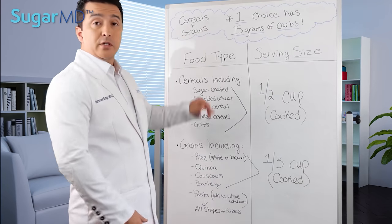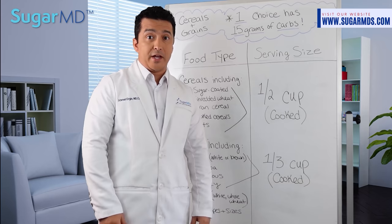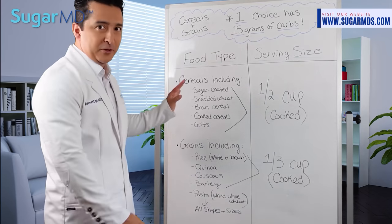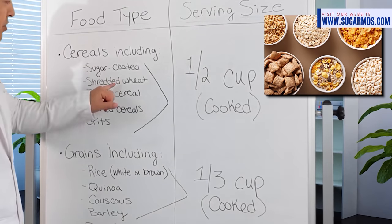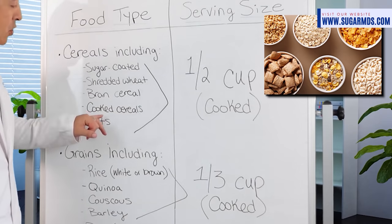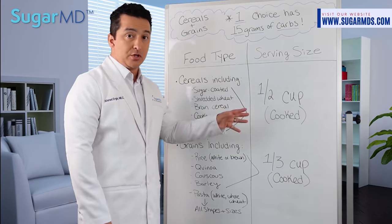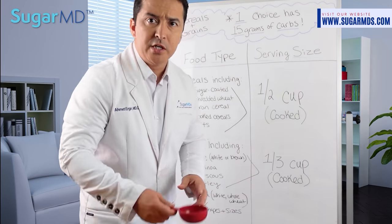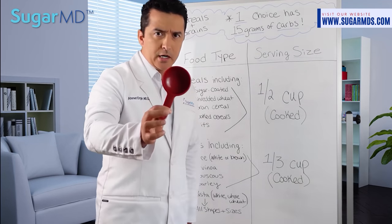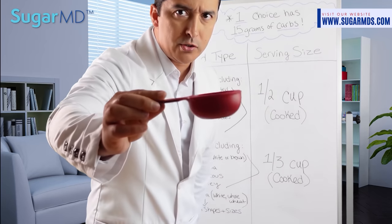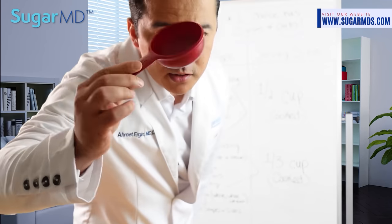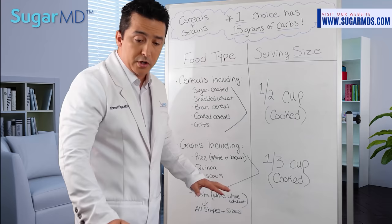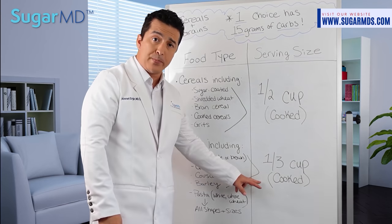Let's move on to cereals and grains. For cereals — including sugar-coated cereals, shredded wheat, cooked cereal, and grits — half a cup cooked is 15 grams. Here's your half cup; it looks pretty small, but that's what it is.